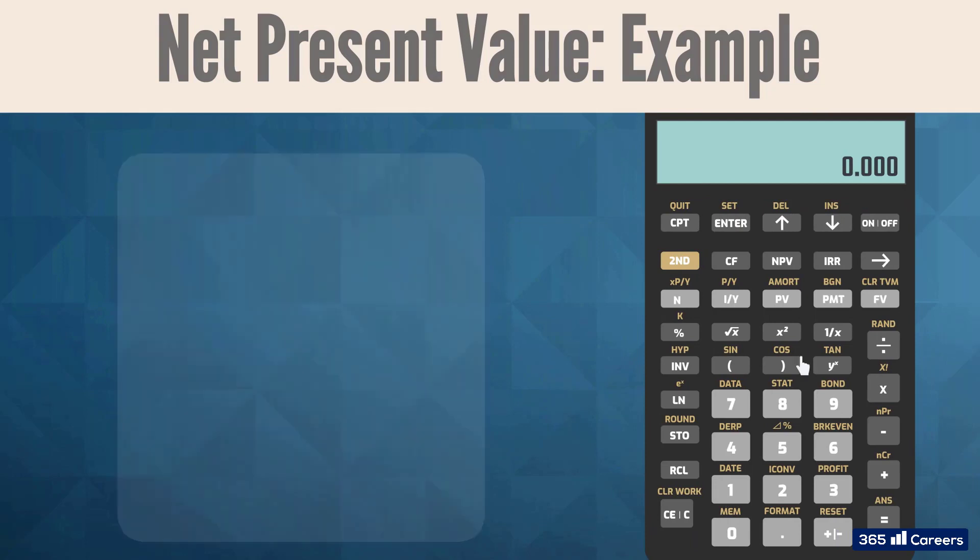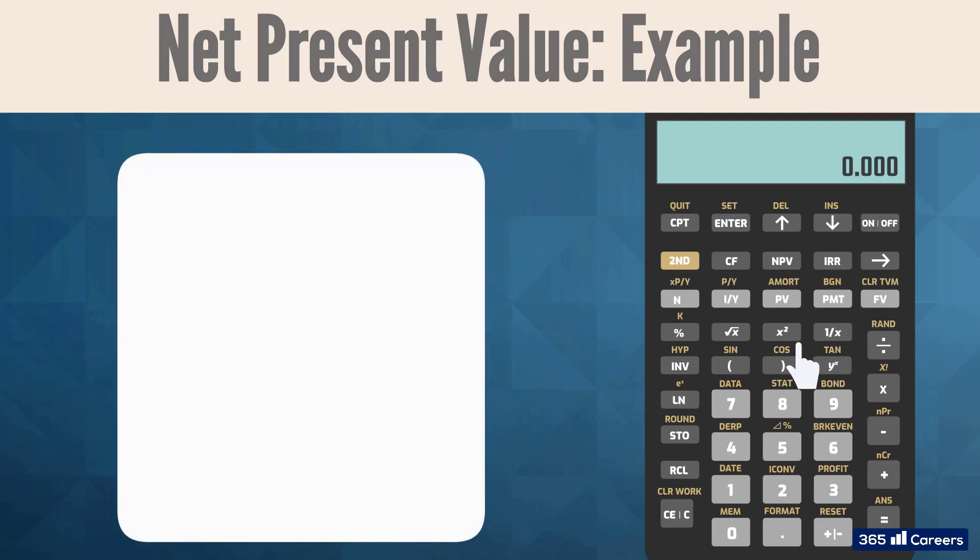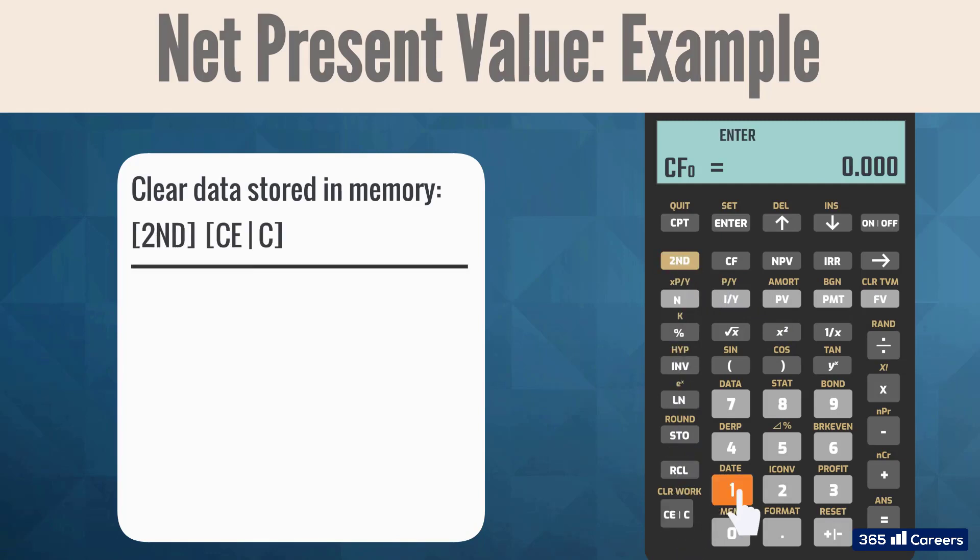Let's calculate Alpha Corporation's net present value using the Texas Instruments BA2 plus calculator. We enter cash flow mode by pressing CF. Then, we need to clear the data stored in memory by pressing 2nd CE slash C. Now, we're ready to enter the relevant cash flows.